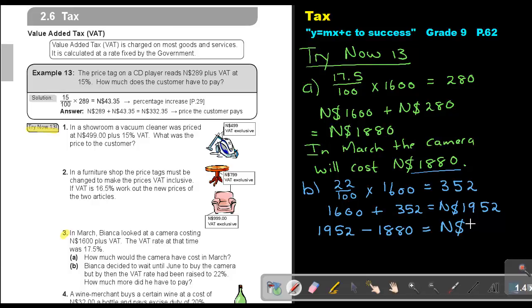And then if I subtract, now she's going to pay N$72 more. So we can just end by saying, in June, the camera will cost N$72 more. And that's how I do that value added tax.